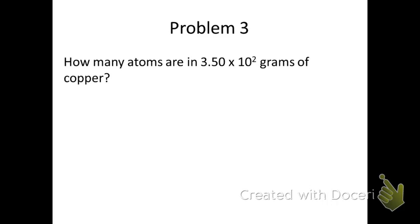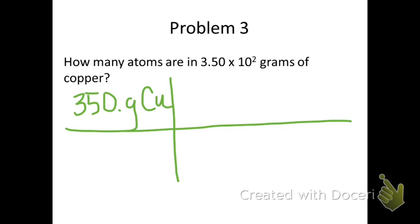Problem number 3 is a little different. You are asked to convert 3.5 times 10 squared grams of copper to atoms. Go ahead and construct your t-chart. Place the given in the appropriate box and place the units of the given in the appropriate bottom right box. You have to put grams in the bottom right and it is equal to 1 mole, so you are forced to put 1 mole on top.